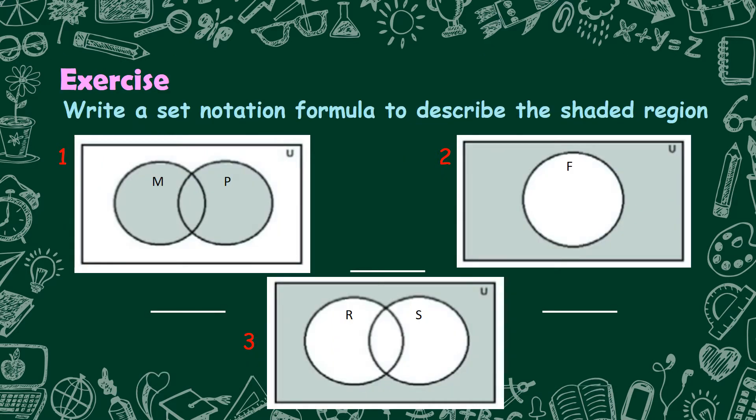Let us try this exercise. Write a set notation formula to describe the shaded region. Try the answer for number 1. Let's see if you got the correct answer. For number 1, the notation formula is M union P. Did you get it? That's nice! Let us have number 2. Try to determine the notation formula. The answer is F complement. Did you get the correct answer? Very good! For number 3, comment your answer below.